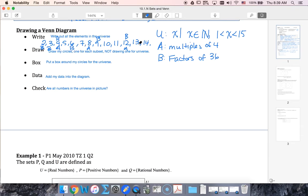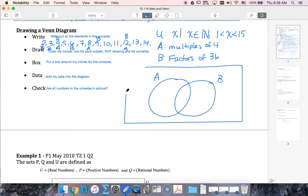So now I've got all my factors of 36 and so I can think about drawing my circles. So I'll have a circle for A, I'll have a circle for B, and then I'm gonna put a box around it and that's gonna represent my universe.